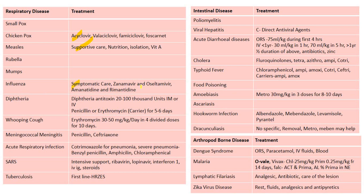Treatment — chickenpox: acyclovir is the commonly used drug. Measles: supportive care, nutrition, isolation, and vitamin A; no specific drug. Influenza: symptomatic care; zanamivir and oseltamivir most commonly used. Diphtheria: diphtheria antitoxin 20,000 to 100,000 units IM or IV; penicillin or erythromycin for five to six days. Whooping cough: erythromycin 30 to 50 mg per kilogram per day in four divided doses for 10 days. Meningococcal meningitis: penicillin is first choice, or third-generation cephalosporin.